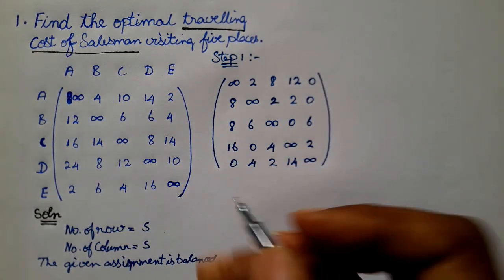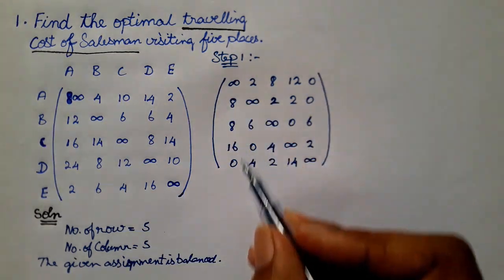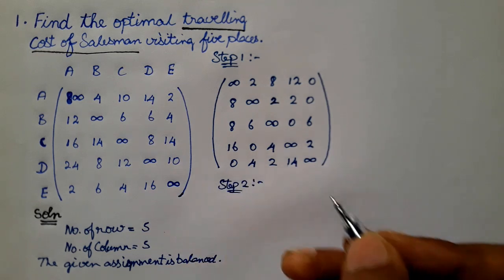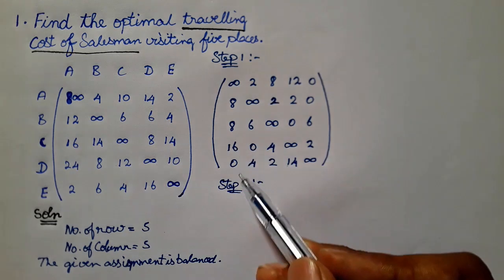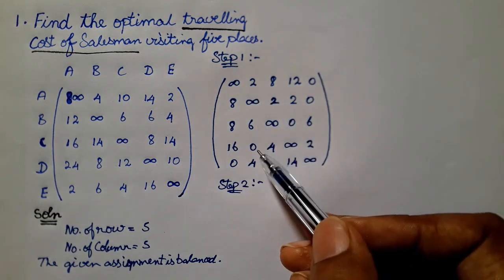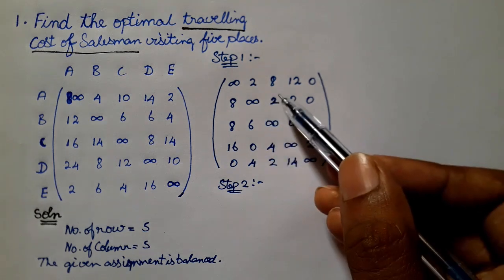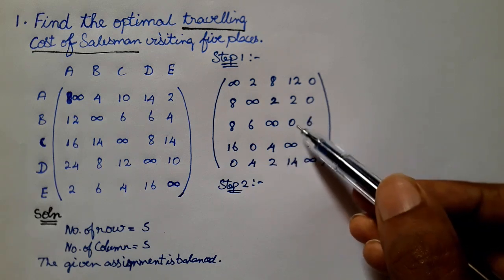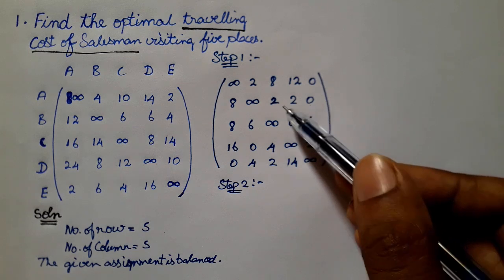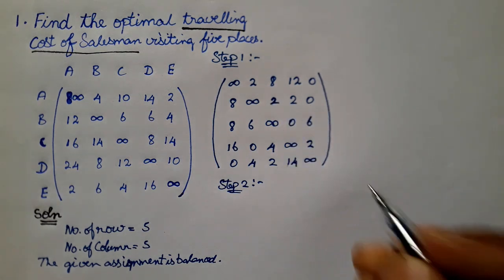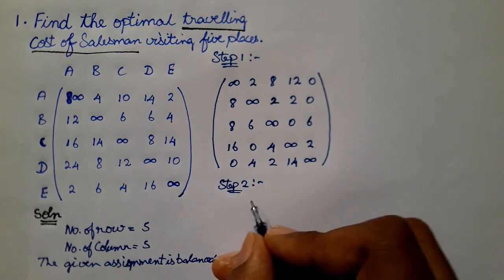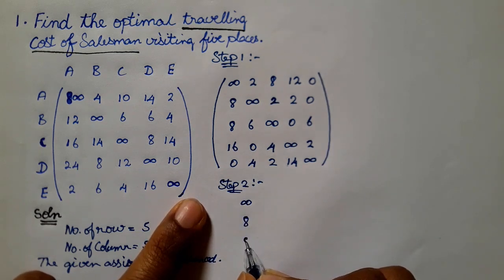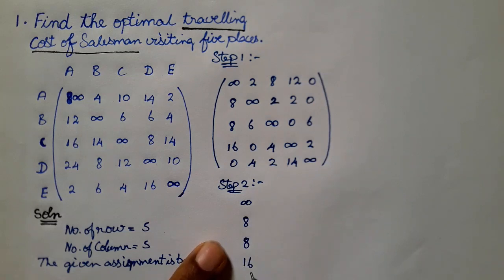Now Step 2: column-wise reduction. We check each column for a zero. The first column values are: infinity, 8, 8, 16, and 0 — already contains a zero, no subtraction needed.